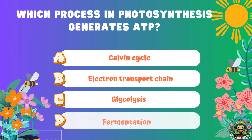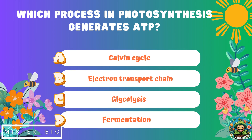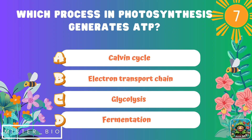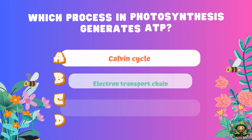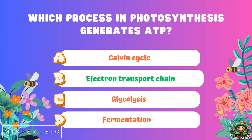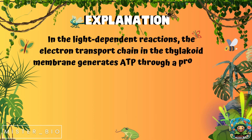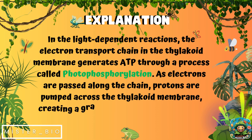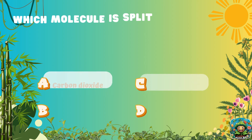Which process in photosynthesis generates ATP? A) Calvin cycle, B) electron transport chain, C) glycolysis, or D) fermentation. The correct answer is B, electron transport chain. In the light-dependent reactions, the electron transport chain in the thylakoid membrane generates ATP through a process called photophosphorylation. As electrons are passed along the chain, protons are pumped across the thylakoid membrane creating a gradient, and this gradient powers ATP synthase to produce ATP.